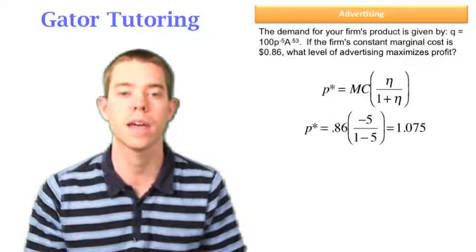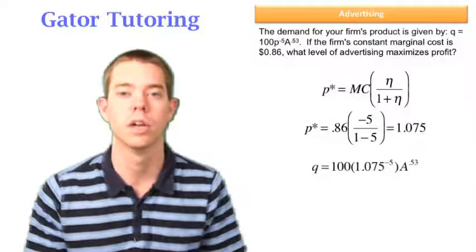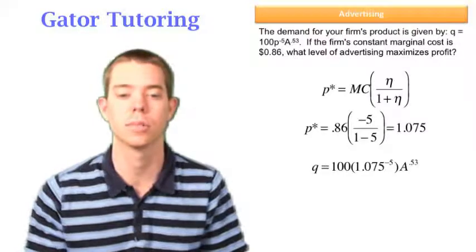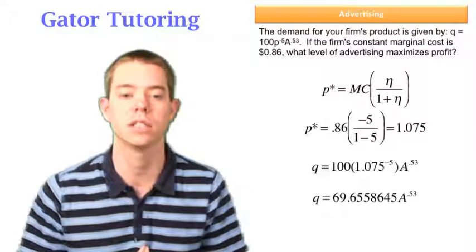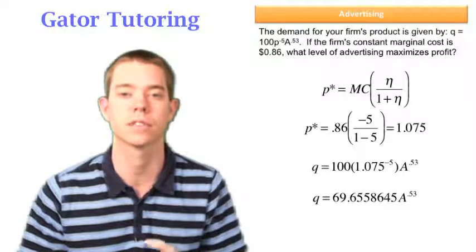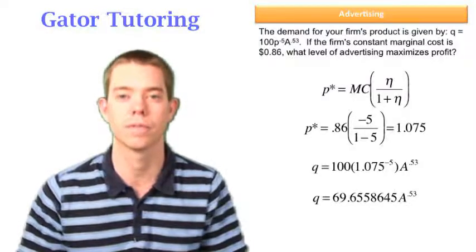Now we can plug that in to our quantity function, so we only have one variable. Now we only have A as a variable, so we can clean this up and we get that quantity is equal to 69.6558645 times A raised to the .53.